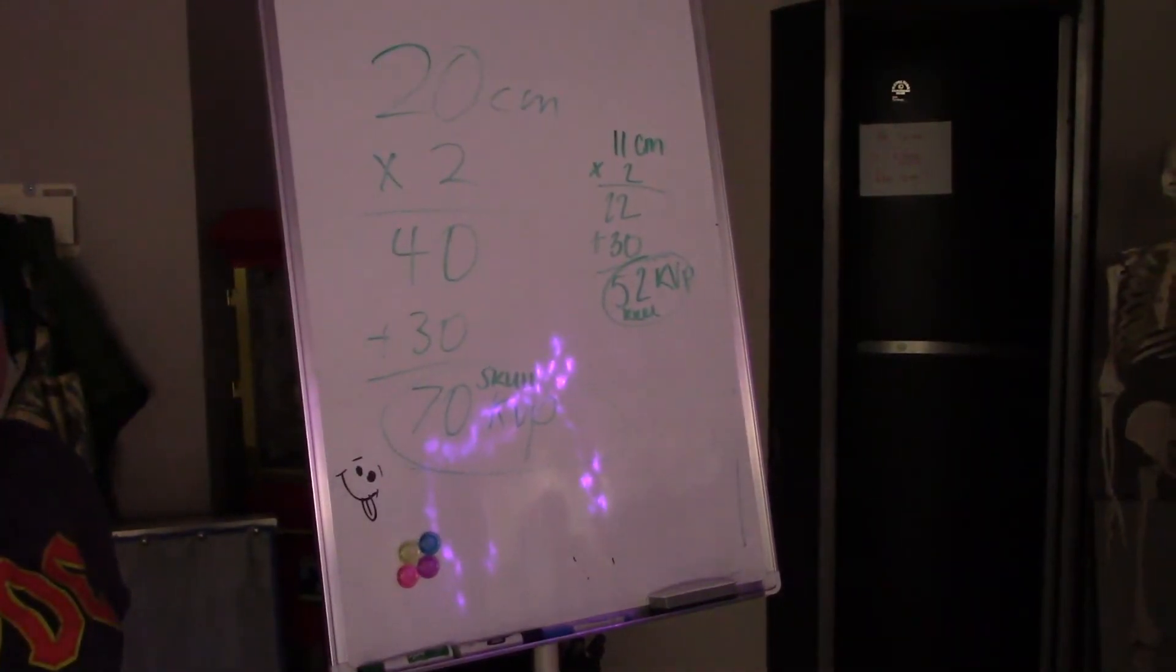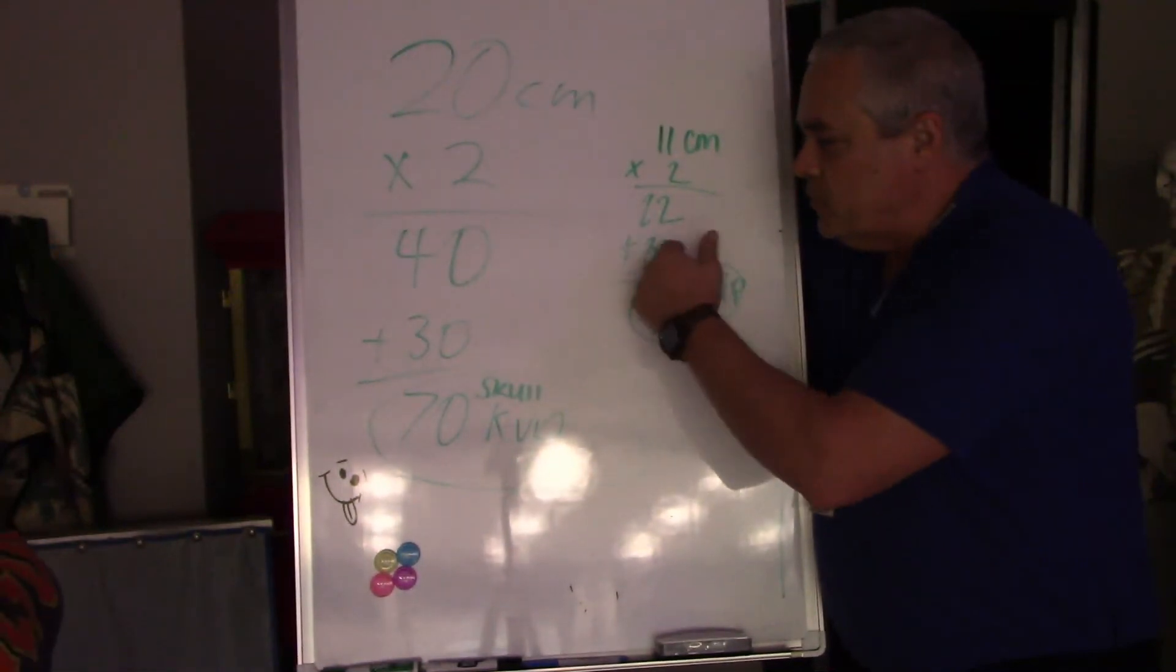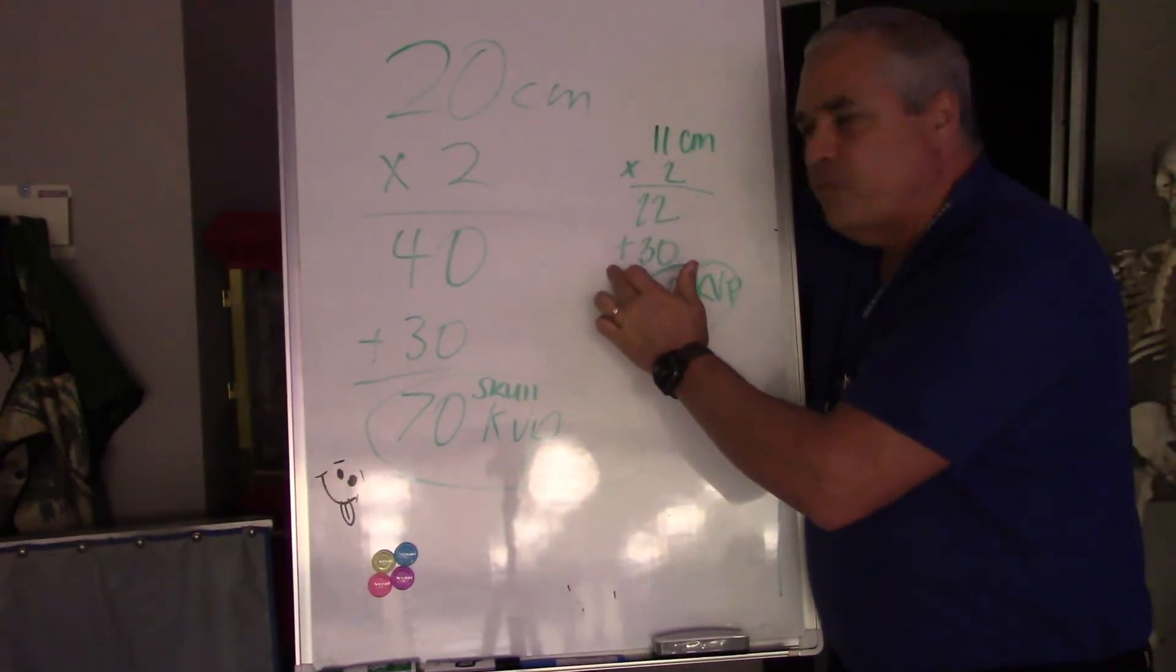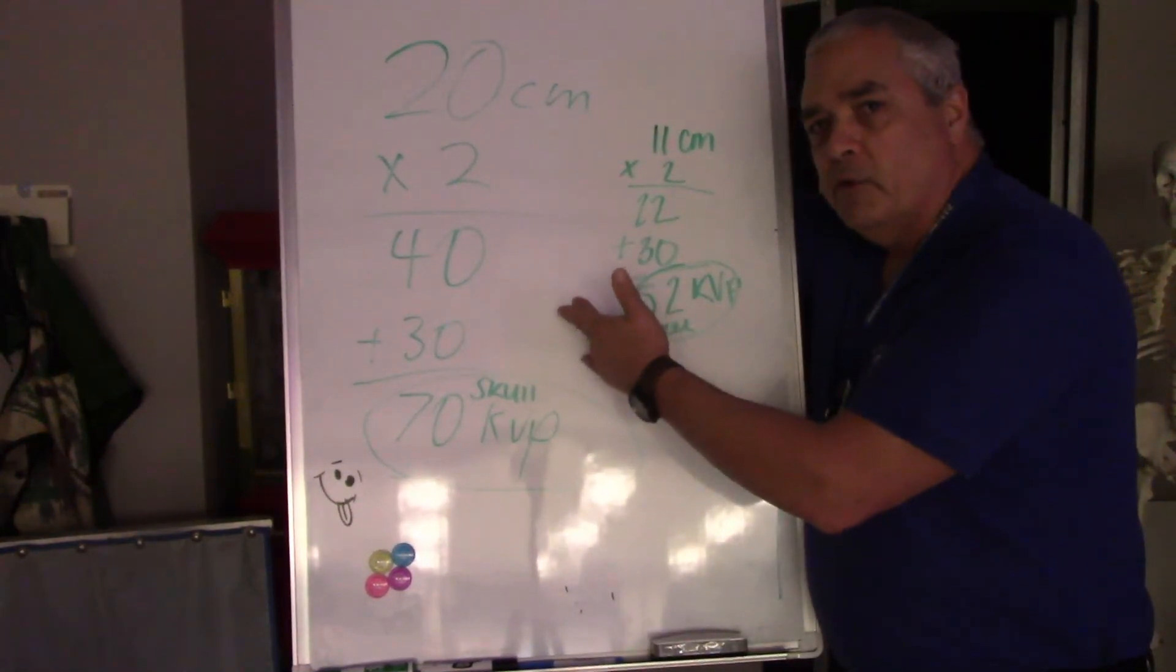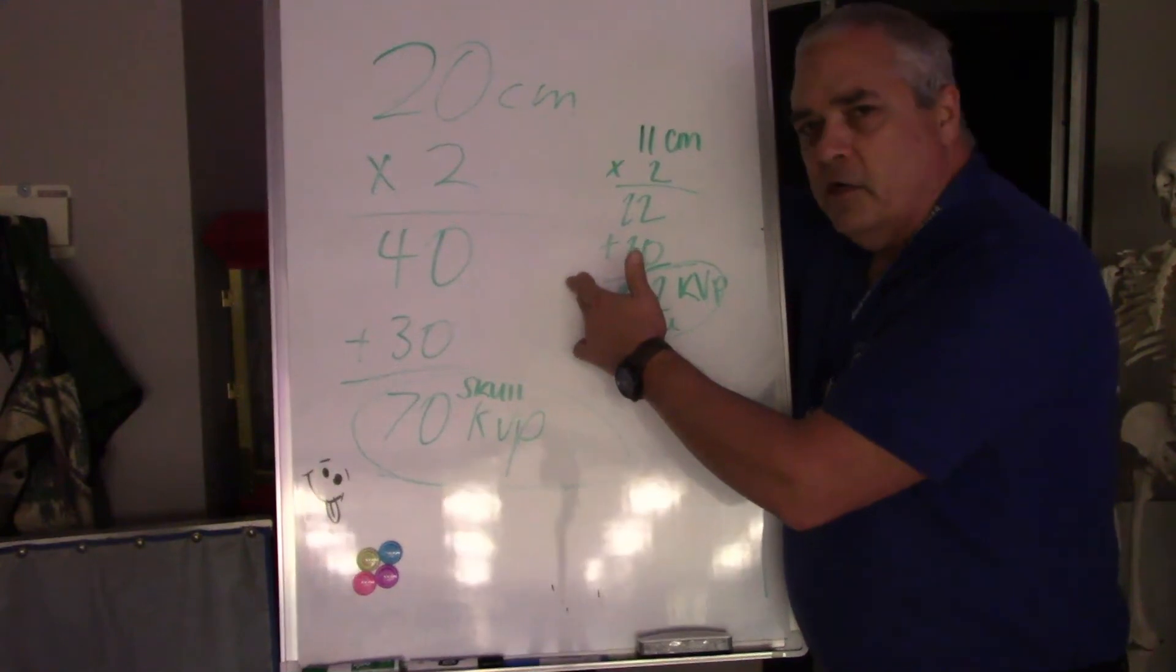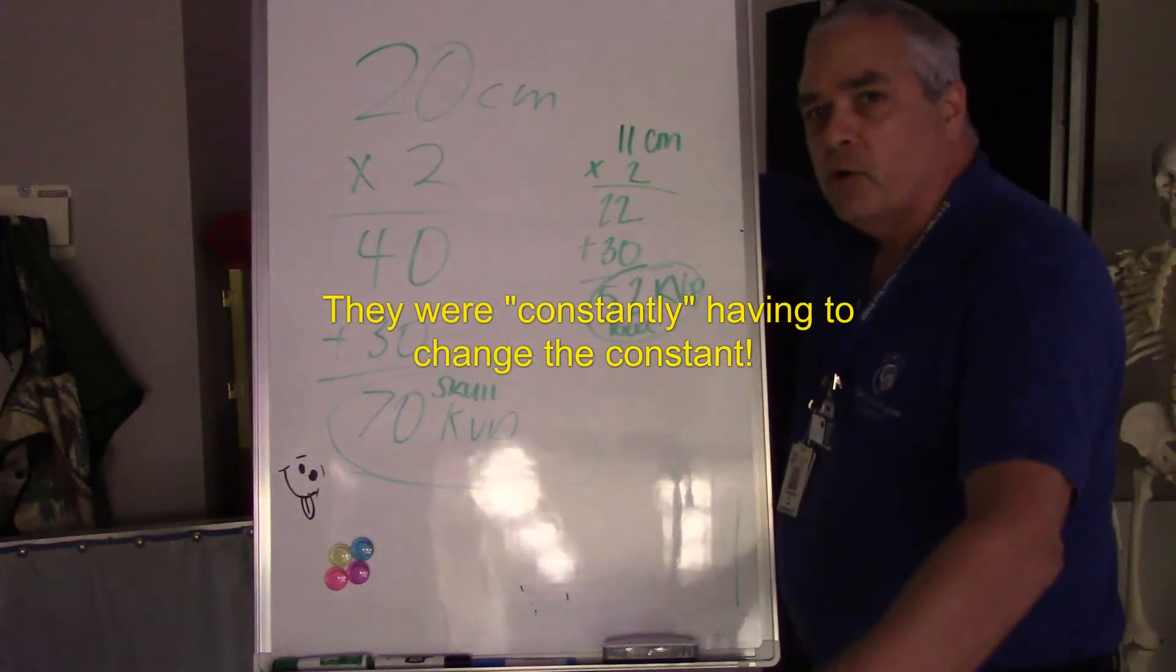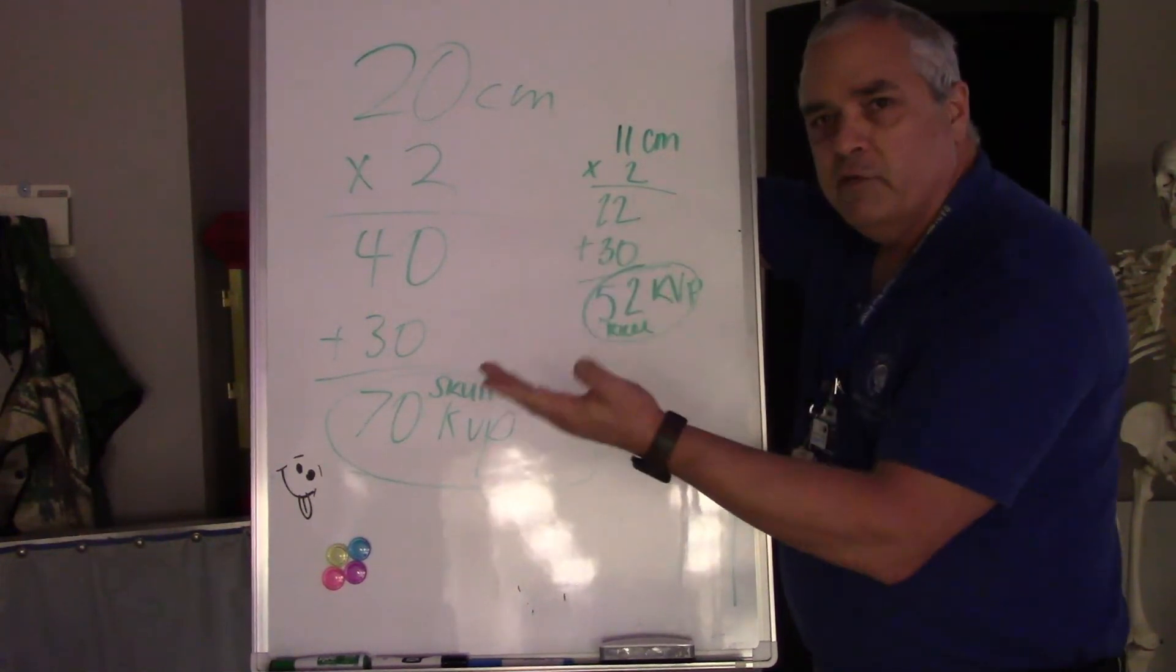One of my students was asking, and this is a legit question, she said where the heck did this 30 come from? This is the constant that we're using for our variable technique chart. We take our measurement, we multiply by two, and then we add this factor in. Where does that factor come from? Well, over the years as people were trying to figure out ways to do this variable technique chart, they said okay, we'll add 20. Oh shoot, that's not good. Well let's add 30. Wait a minute, that's not good either. Let's add 35 or 40 or something else.